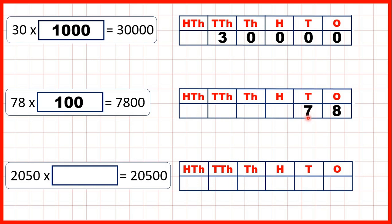And what's really happened when we multiply by 100 is that the digits have moved two squares to the left and we have zeros in our empty tens and ones columns.